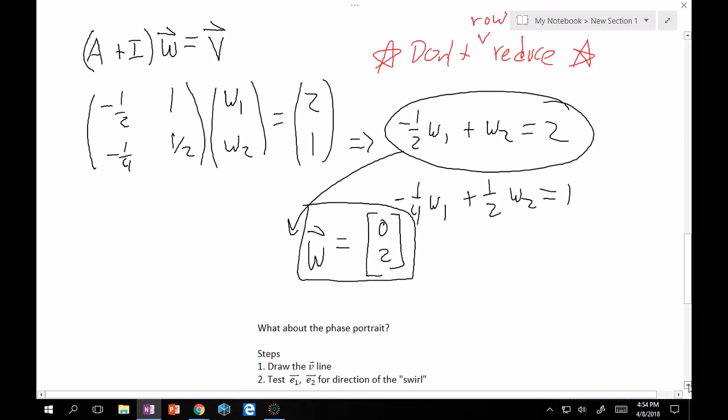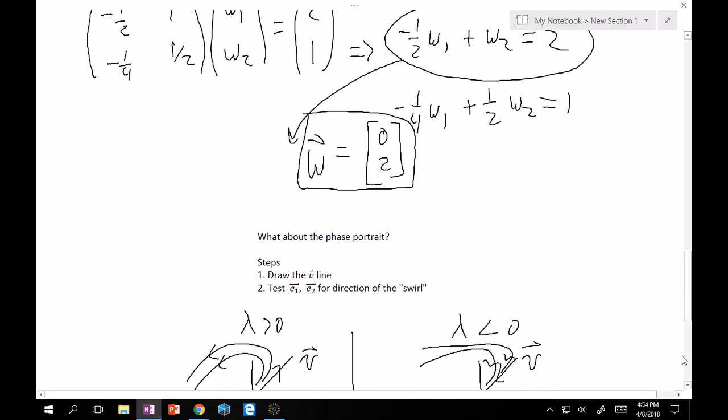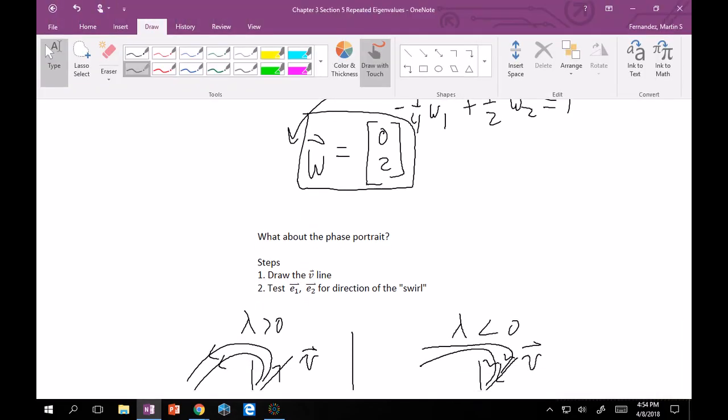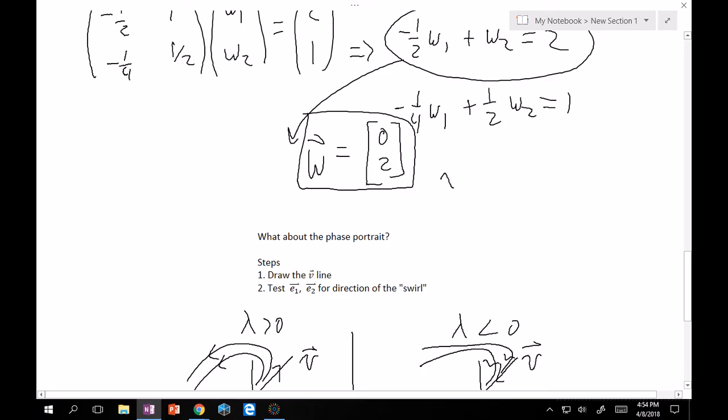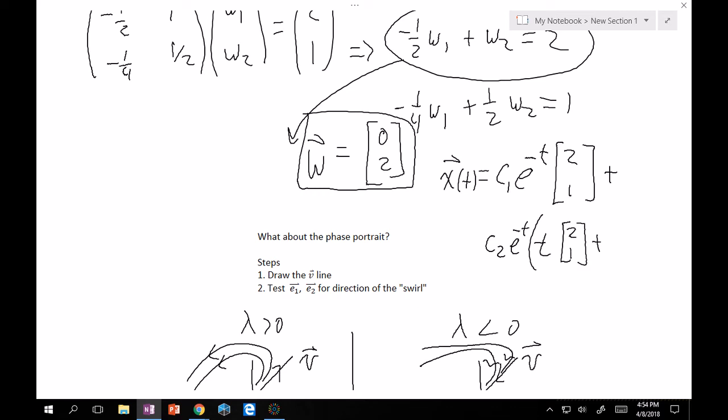Then, let's keep going down. We ran out of some space, but that's fine, because now we can just write the general solution. So, general solution as given, we can write it as X of T is equal to C1 E to lambda T, which is minus 1, times T, times V, which was 2, 1, plus C2 E minus T, and then times TV. So, T onto this 2, 1, plus our W vector, which was 0, 2. And that's our final, general solution. That's it. That's all there is to it.